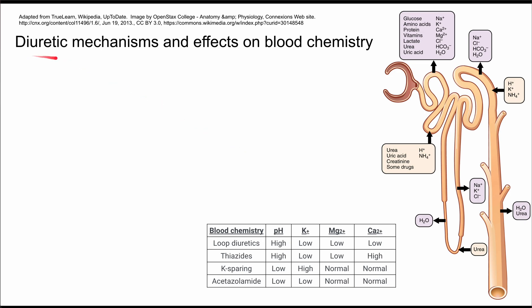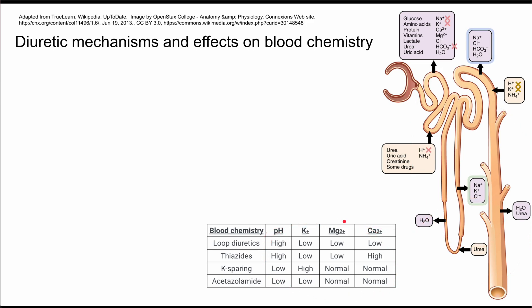This is a video on diuretics, their mechanisms of actions, and the effects on blood chemistry. The entire video is summarized by these effects on blood chemistry, but we're going to work through each category of diuretics and try to work out where on the nephron they act and make sense of the mechanisms that lead to these blood chemistry changes. Let's start by color coding each category of diuretic.